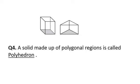Coming to fourth question: a solid made up of polygonal regions. That is a very simple question — the answer is a polyhedron. A solid made up of polygonal regions, or in short a solid with flat faces or flat surfaces, is known as a polyhedron.